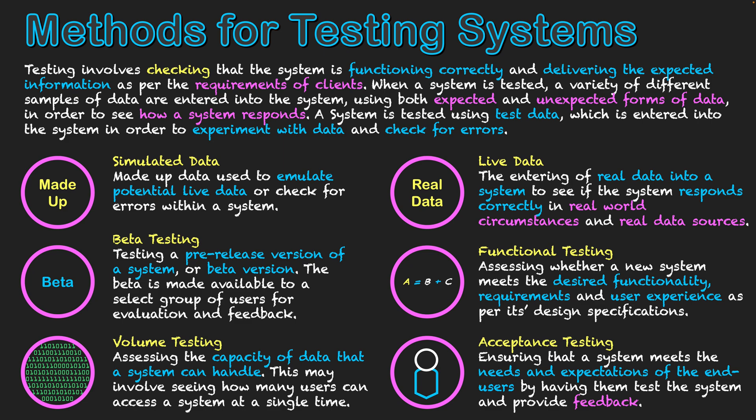To summarize: the different methods for testing include simulated data — made-up data used to emulate real data — and live data, which is real-world data. The testing formats are: beta testing, using a pre-release version of the system; volume testing, checking the capacity a system can handle before integrity is affected; functional testing, verifying the system does what it's intended to do with sub-programs working correctly; and acceptance testing, confirming the user is happy with their experience and what the system accomplishes, allowing them to sign off that the system is good to go.